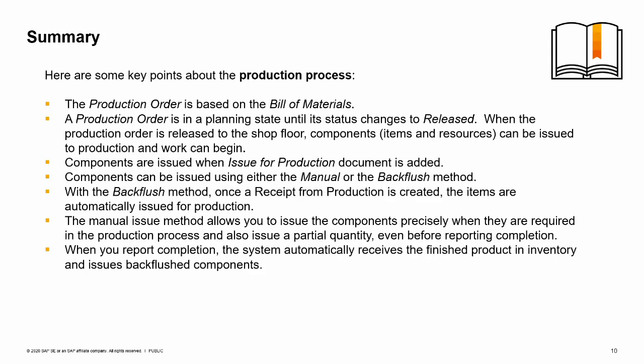Here are some key points about the production process to take away from this session. The production order is based on the bill of materials. A production order is in a planning state until its status changes to released. When the production order is released to the shop floor, components — items and resources — can be issued to production and work can begin. Components are issued when an issue for production document is added.